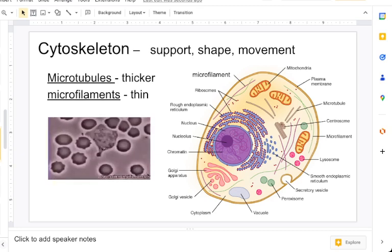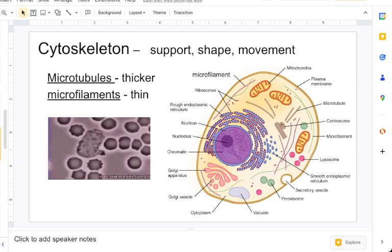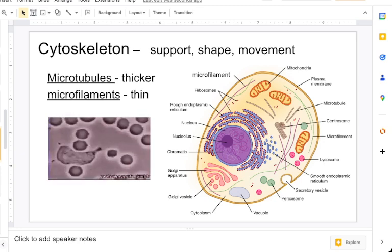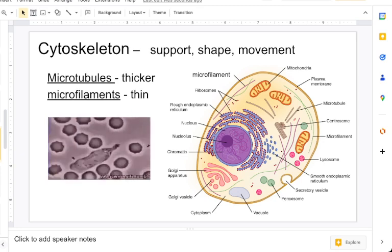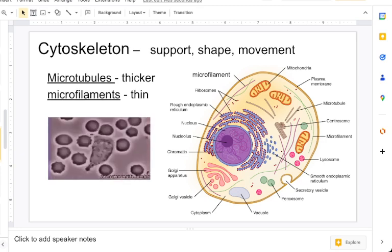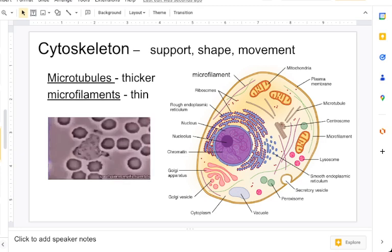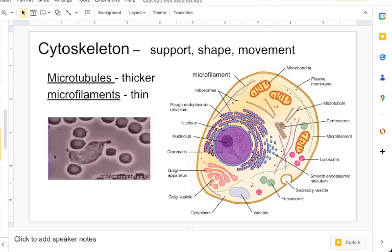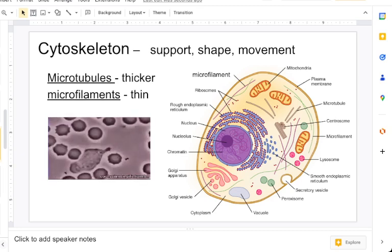You have microtubules and microfilaments. Microtubules are a bit thicker than microfilaments, which are a little bit thinner, and these can help with cell division, but they are part of the cell's cytoskeleton.